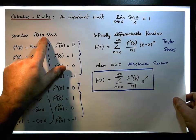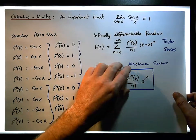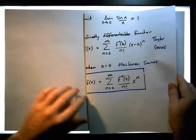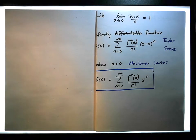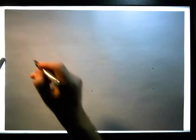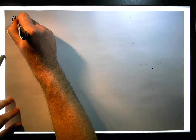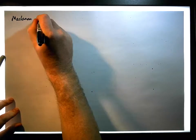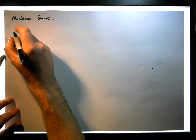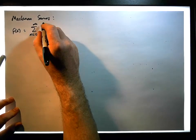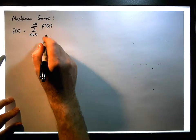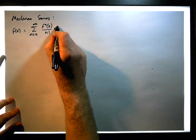Let's now expand sin(x) out into this infinite summation. We have our Maclaurin series: f of x equals the infinite summation from n equals 0 to infinity of the n-th derivative of our function estimated at 0, all over n factorial times x to the power of n. We'd like to find what the Maclaurin series is associated with sin(x).